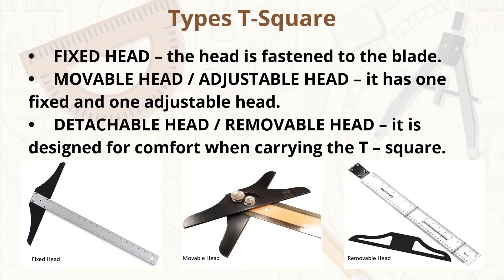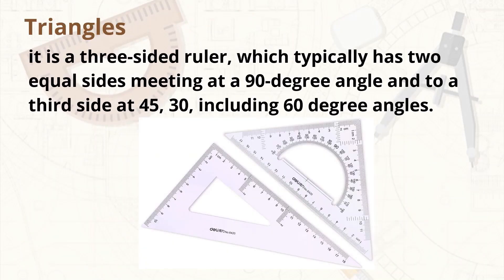There are different types of T-square. The fixed head — its head is fastened to the plate and is used for ordinary work. The movable or adjustable head — it has one fixed and one adjustable head and is used only for occasional drawing. The detachable or removable head — it is designed for easy transport, and the blade can also be used separately as a straight-edged ruler. Triangles — a three-sided ruler which typically has two equal sides meeting at a 90-degree angle and to a third side at 45, 30, and 60-degree angles. Commonly used triangles are 30° by 60° and 45° by 45°.